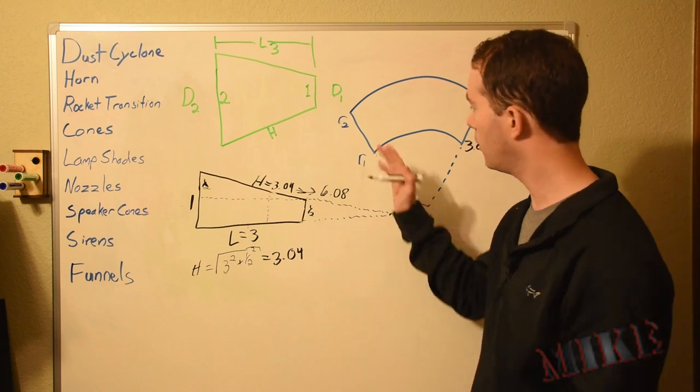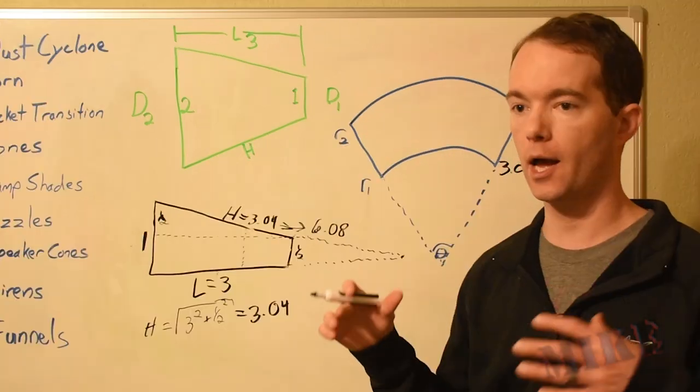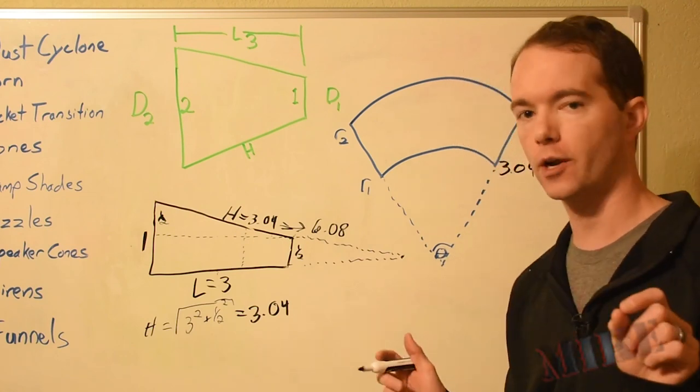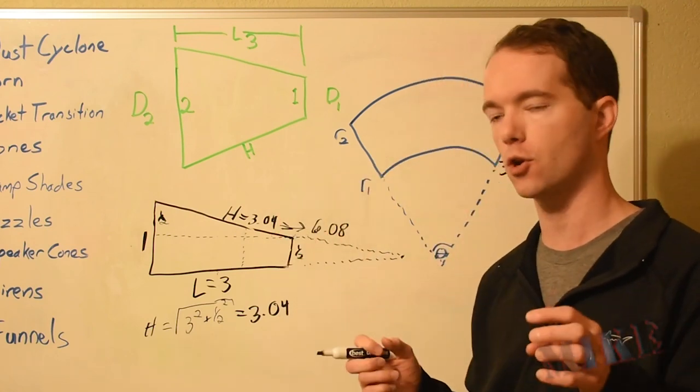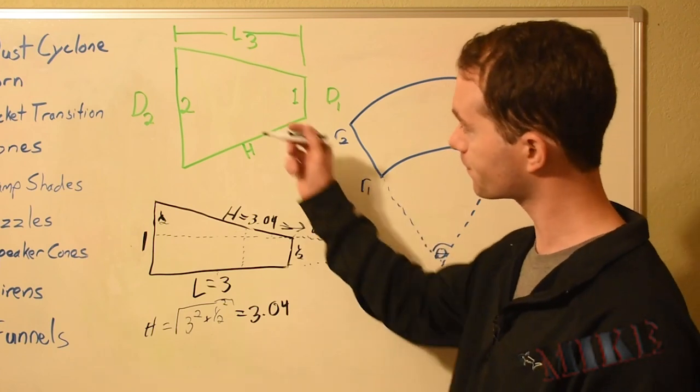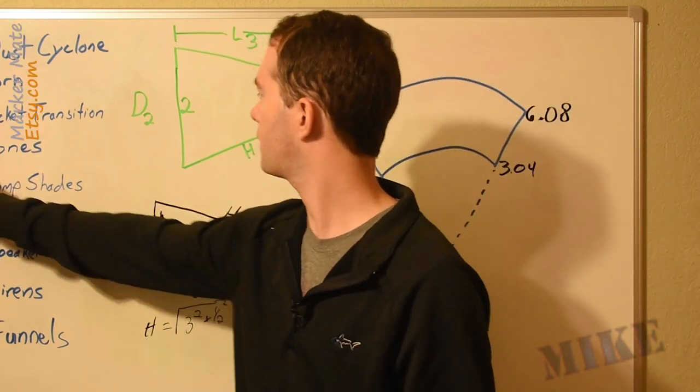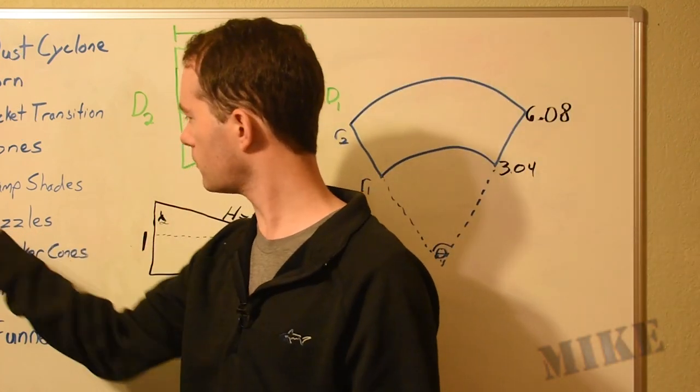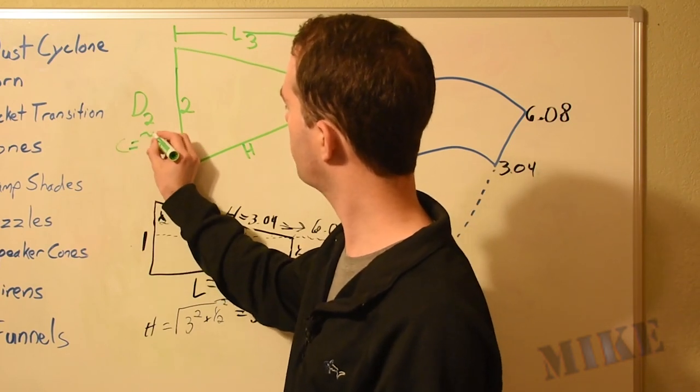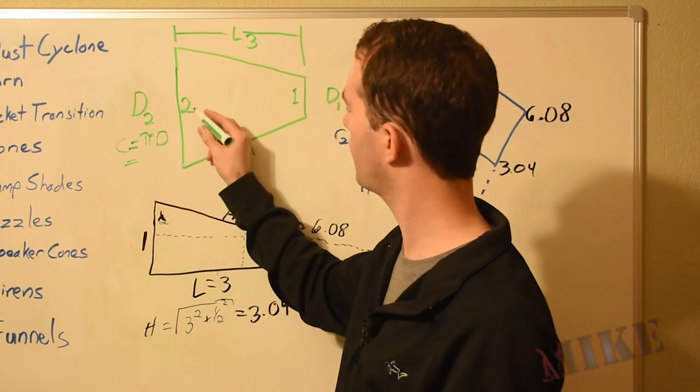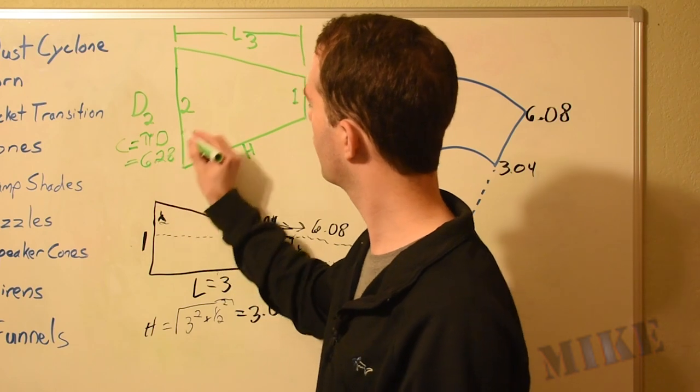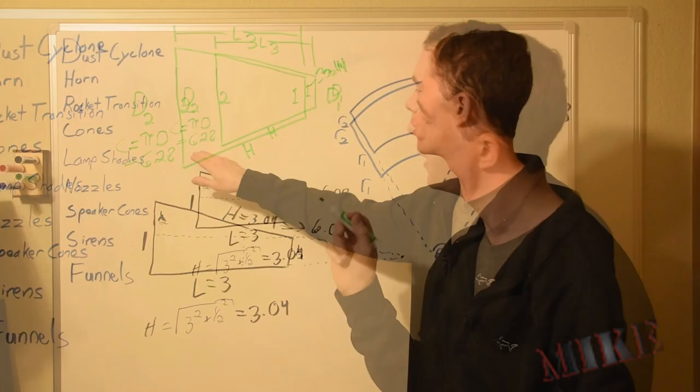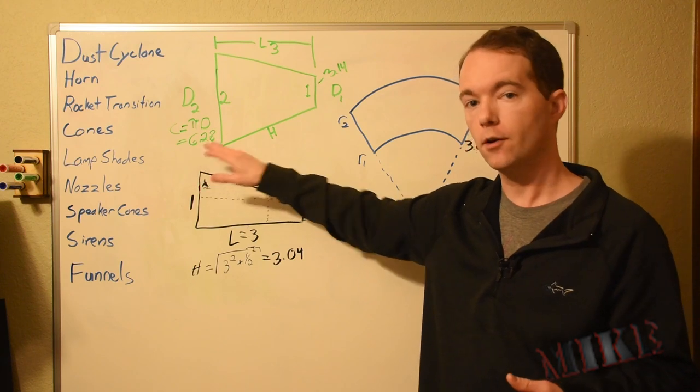But now we need to find the angle that this thing occupies because depending on the angle of that, the shape of your cone is going to completely change. And so here's kind of where the trick comes in. It took me a bit to conceptualize how this is going to work. Imagine this: This diameter has a circumference. Circumference is pi D. So our circumference here, circumference of our base is pi D, which in our case is 6.28. This end here, pi D is 3.14 because D is 1.